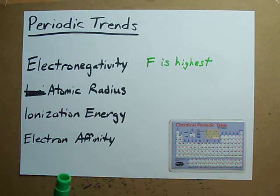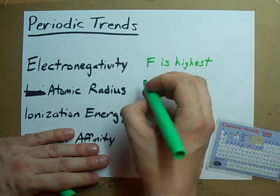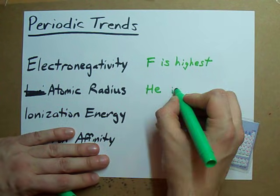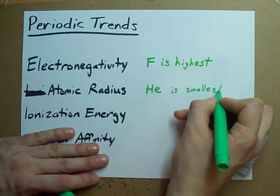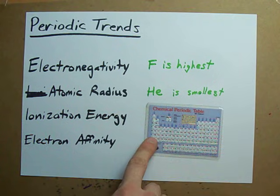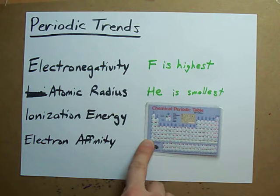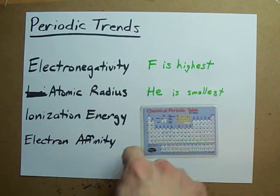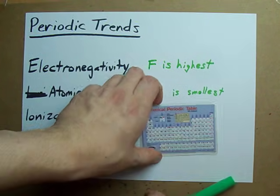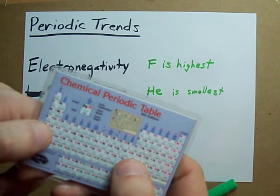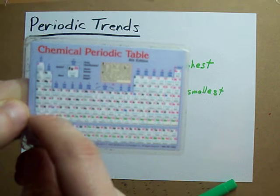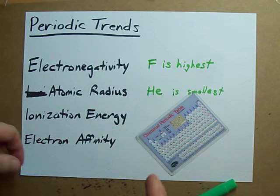The same goes for atomic radius. When it comes to atomic radius, He, which is kind of in the same corner as F, He is the smallest. By extension, if He is smallest, these are the biggest — and francium (Fr) down here is actually the biggest. So if you're asked which atom is bigger between, say, calcium and aluminum, calcium is closer to the big area, so calcium is bigger. Piece of cake.